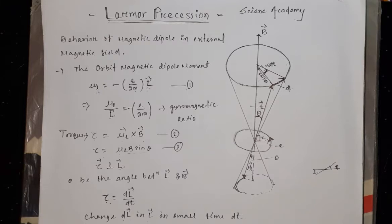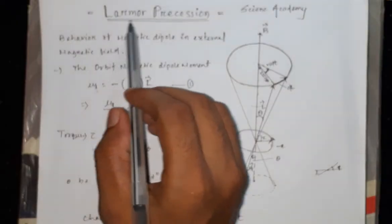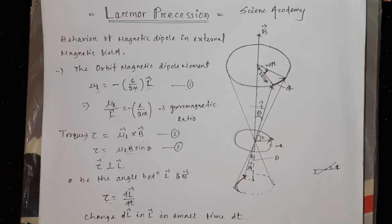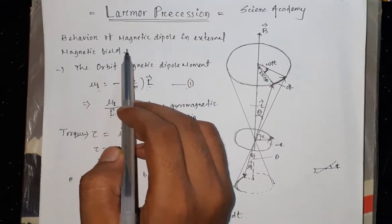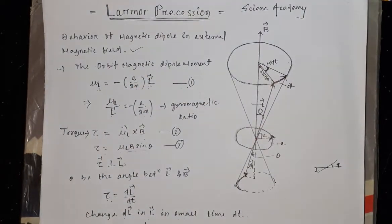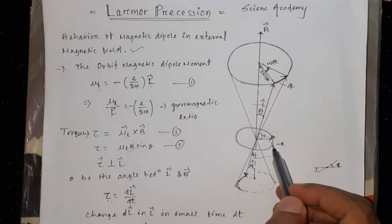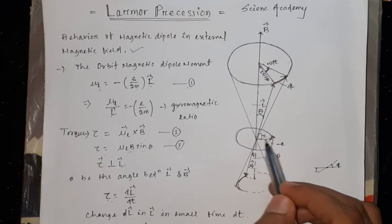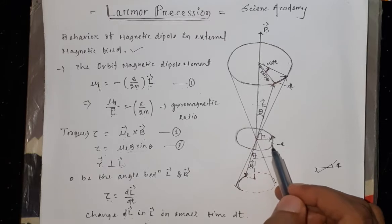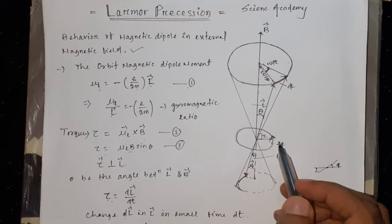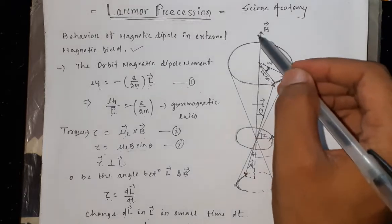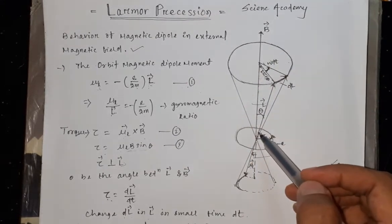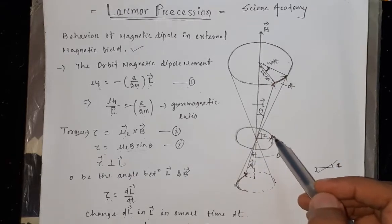Hello everybody, welcome back to Science Academy. In today's topic we will discuss about Larmor precession. The basic concept is that in this precession we will observe the behavior of a magnetic dipole in an external magnetic field. When an electron is revolving around a nucleus, it creates a dipole magnetic moment, and due to the creation of this dipole moment, a magnetic field is induced.